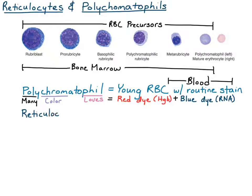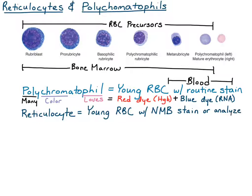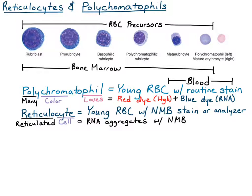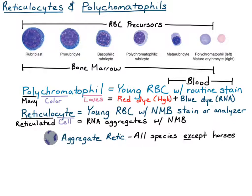Reticulocytes are also young red blood cells, but they're identified with a different stain or by your hematology analyzer. Polychromatophils are reticulocytes — we're just counting them with different methods. A reticulocyte literally means 'reticulated cell,' because when you add new-methylene blue to the blood, it aggregates the RNA within the reticulocyte so you can actually see it on your new-methylene blue stain smear. All of the RNA is clumped and aggregated together into those blue reticular arrays. These aggregate reticulocytes are present in all species except the horse.